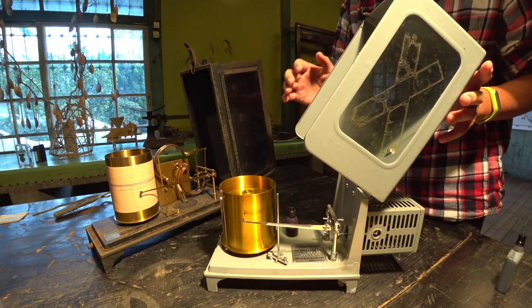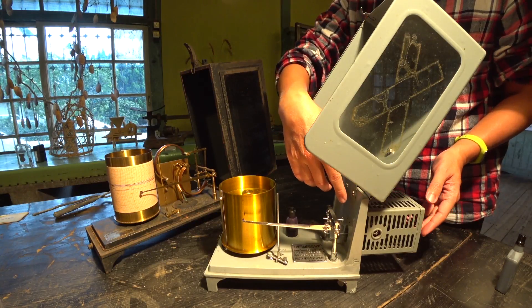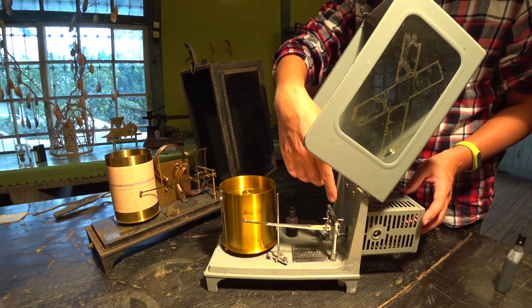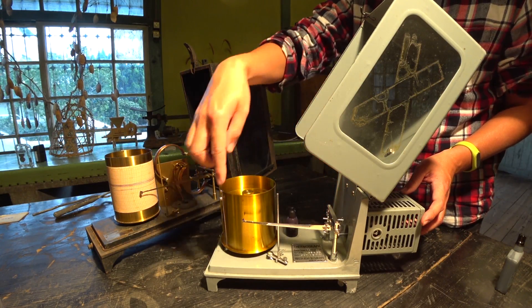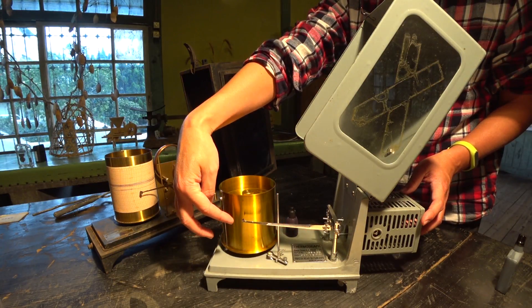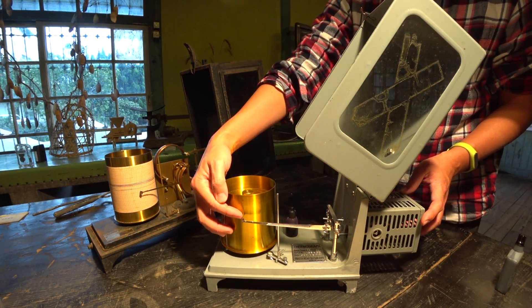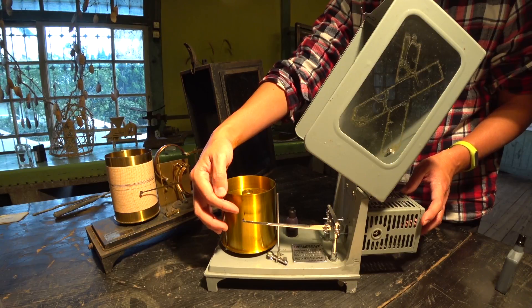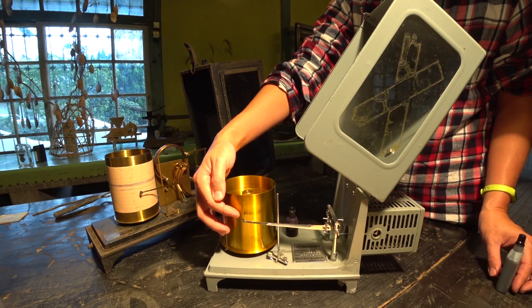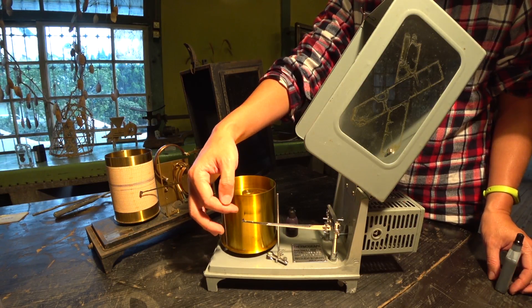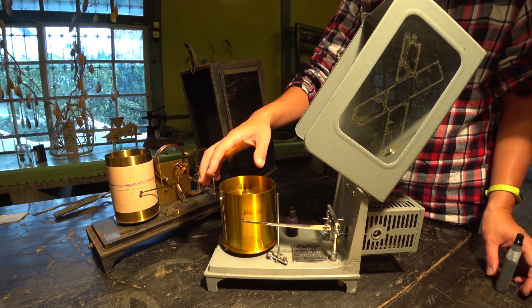我們現在把它打開。打開之後會看到外部的金屬片牽動裡面的指針,就在這個地方。指針的前端是一個凹槽,這個凹槽可以加上墨水,然後就可以在記錄紙上畫出線條。